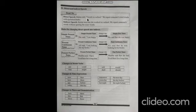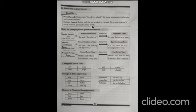Direct speech example: Raima said, 'I work in a school.' We report someone's exact words with quotation marks — quotation marks are used in direct speech. Indirect speech: Raima said that she worked in a school. We report someone's words without quoting the exact words verbatim.